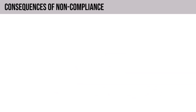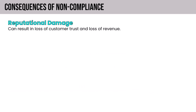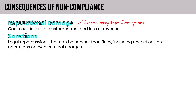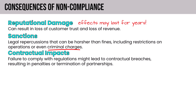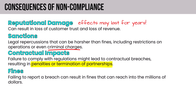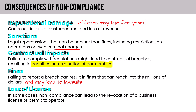Moving on to the consequences of non-compliance. There's the potential for reputational damage, which can result in a loss of customer trust and a loss of revenue, and the effects can last for years or even decades. Sanctions are legal repercussions that can be harsher than fines, including restrictions on operations or even criminal charges. Contractual impacts — failure to comply with regulations might lead to contractual breaches resulting in penalties or termination of partnerships. Fines — failing to report a breach can result in fines reaching into the millions of dollars and may lead to lawsuits. And loss of license — in some cases, non-compliance can lead to the revocation of a business license or a permit to operate.